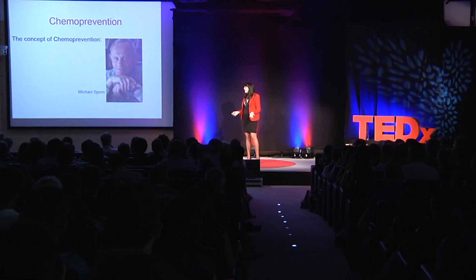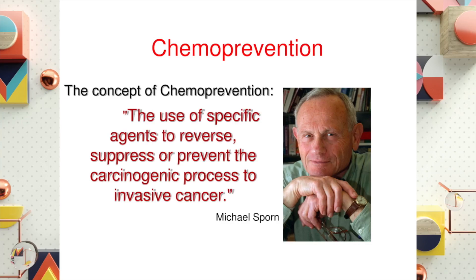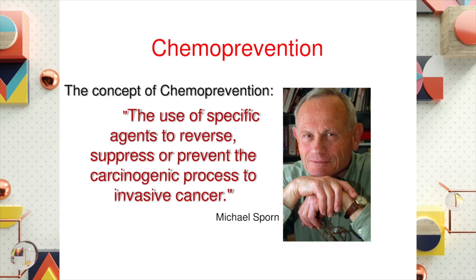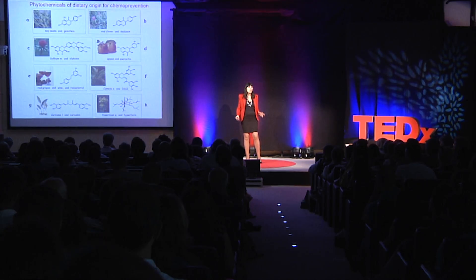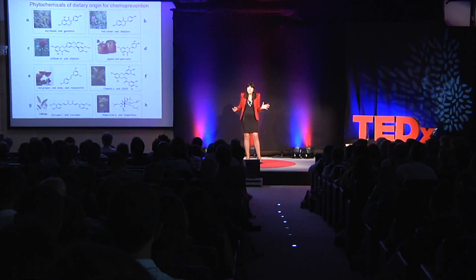There are many plant phytochemical derivatives that are able to prevent the tumor. What is prevention? What is chemoprevention? This has been defined by Michael Sporn — a mentor and collaborator — as using specific agents to reverse, suppress, or prevent the carcinogenic process to invasive cancer. Now we can make many aspirin-like compounds from plants, and particularly from the diet, from food derivatives.